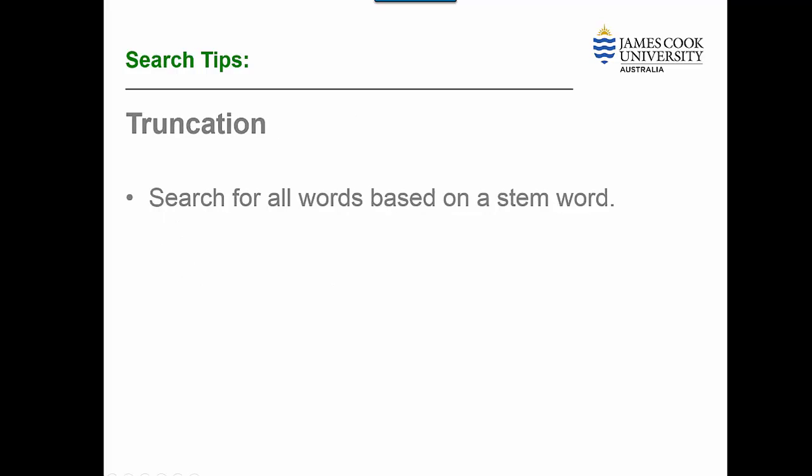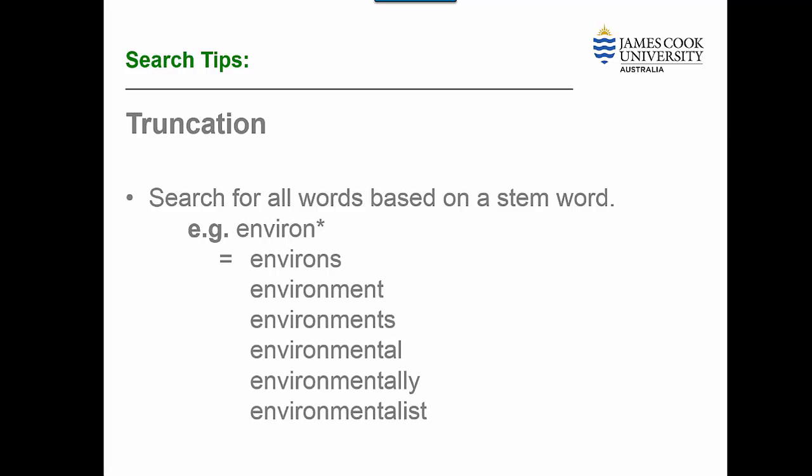We can also get more results by using truncation, which is used to find different word endings. This can be useful if there are not enough results or if different word endings will be relevant to the topic. For example, environ would find environs, environmental, environmentalist, etc.